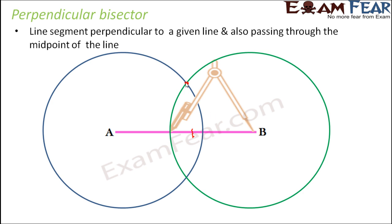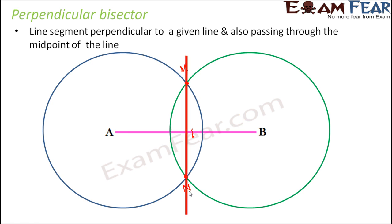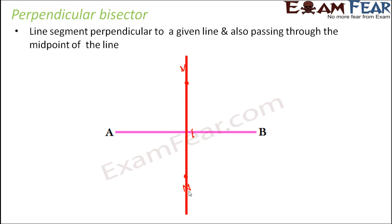The two circles intersect at two different points. We call these points M and N. Now we join these two points M and N.